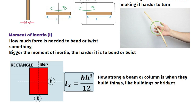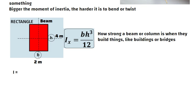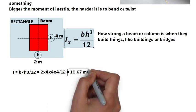Imagine you have a rectangular beam with width 2 meters and height 4 meters. Now let us calculate the moment of inertia. I is equal to B into H cube divided by 12, that is 2 into 4 raised to 3 divided by 12, which is equal to 10.67 m⁴. The moment of inertia of this rectangular beam is 10.67 m⁴.